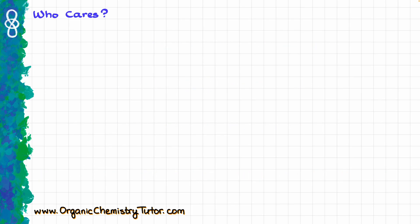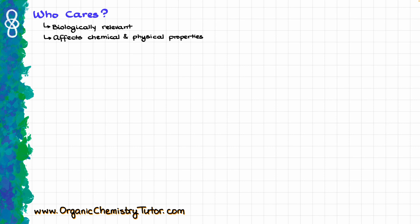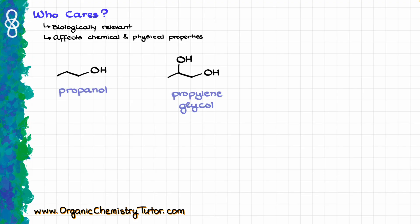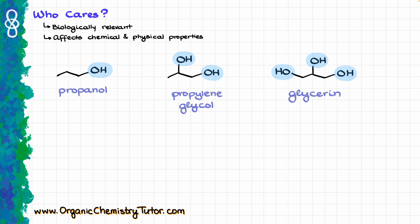So why do we care about hydrogen bonding so much? Well, we are alive because of it — hydrogen bonding is very biologically relevant. It also affects both chemical and physical properties of molecules. For example, comparing propanol, propylene glycol, and glycerol: these three molecules are very similar, differing mainly in number of OH groups. Their boiling points are strikingly different — 97°C for propanol, 188°C for propylene glycol, and 290°C for glycerol — jumping roughly 90°C by adding just one extra OH group.